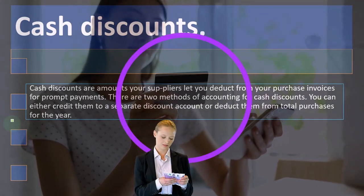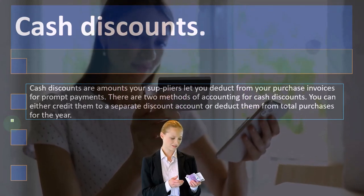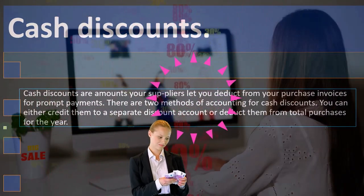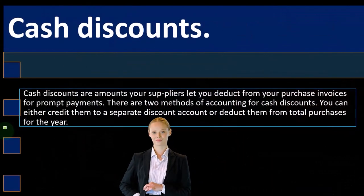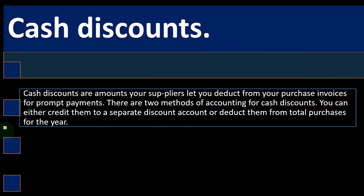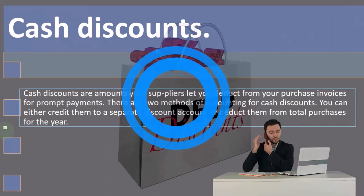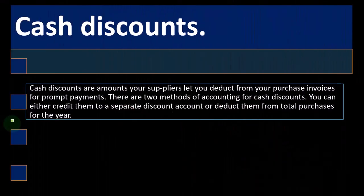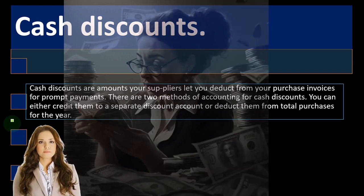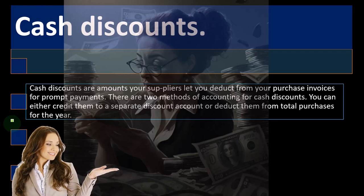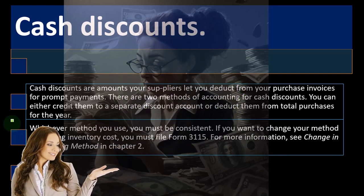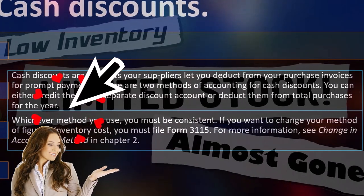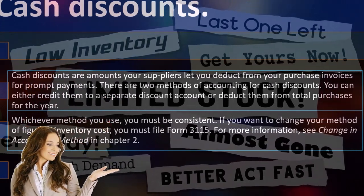For example, when buying inventory on account, you could assume you'll pay within 10 days instead of 30 days to get a discount, and record it at the discounted price. Or you could record it at the full price and, when you do receive the cash discount, either revalue the inventory or record it as income. Whichever method you use, you must be consistent. If you want to change your method of figuring inventory cost, you must file Form 3115. See 'Change in Accounting Method' in chapter two for more information.